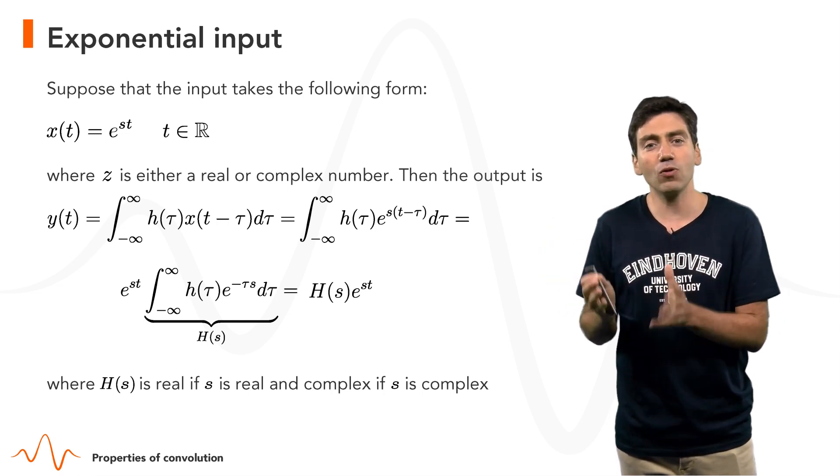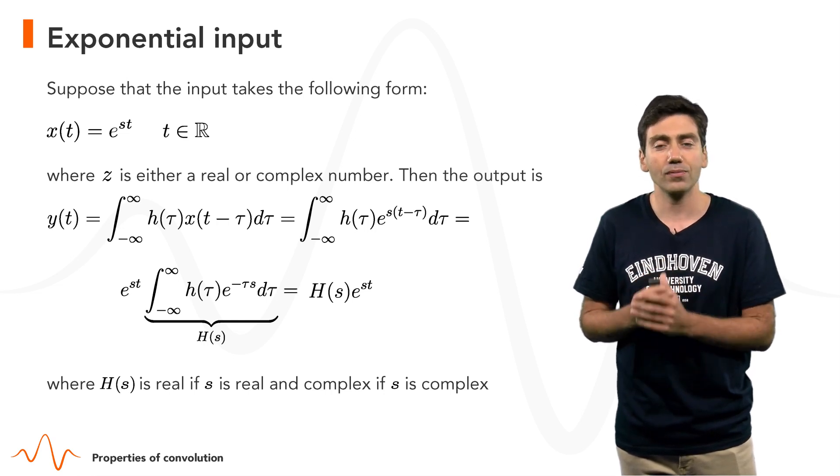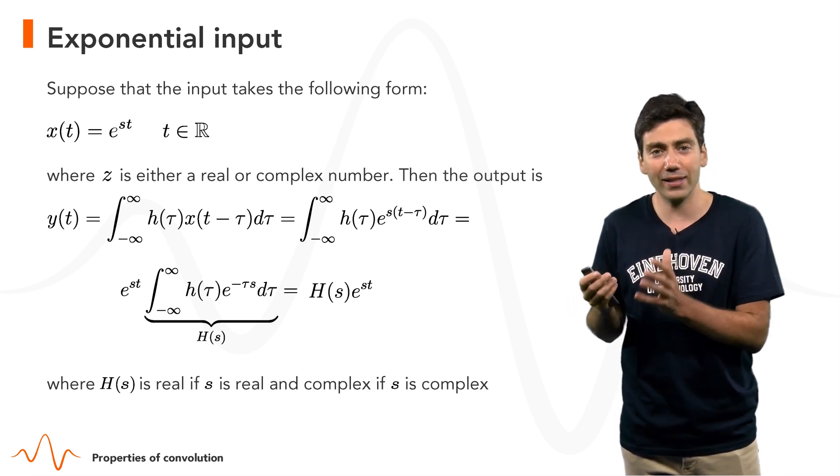So this capital H is equal to the integral from minus infinity to infinity of h(τ) e^(-sτ) dτ. And we get this number, H(s) times e^(st).